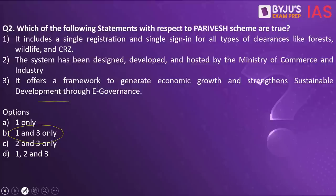What is the intent and objective of the Parivesh portal? It offers a single window solution through process automation. For example, if a private company wants to come up with a developmental program, it requires permission from the Government of India. Through the traditional process, it goes through a lot of red tape, causing delay, reducing ease of doing business, and increasing costs. An online system — the Parivesh portal — now provides a single window for all business units seeking clearances from the central government.